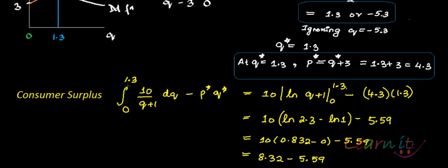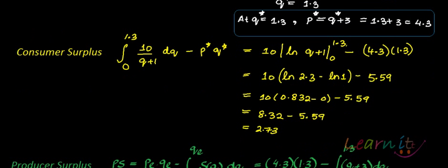So consumer surplus = integral from 0 to 1.3 of 10/(Q+1) dQ − P*Q*. The integral of 1/(Q+1) is log(Q+1), giving [10·log(Q+1)] from 0 to 1.3, minus 4.3×1.3 = 5.59. This yields log(2.3) − log(1) − 5.59 = 0.832 − 0 − 5.59.